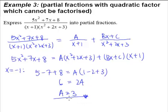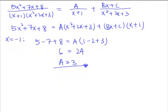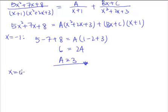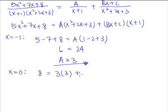Now that we have found A, the next thing is to find B and C. When x = 0, Bx disappears, so substituting x = 0: the left-hand side gives 8. On the right-hand side, (0 + 0 + 3) gives 3A, and since A = 3, that is 9. The Bx term vanishes and we are left with C multiplied by 1. So 8 = 9 + C, therefore C = −1.